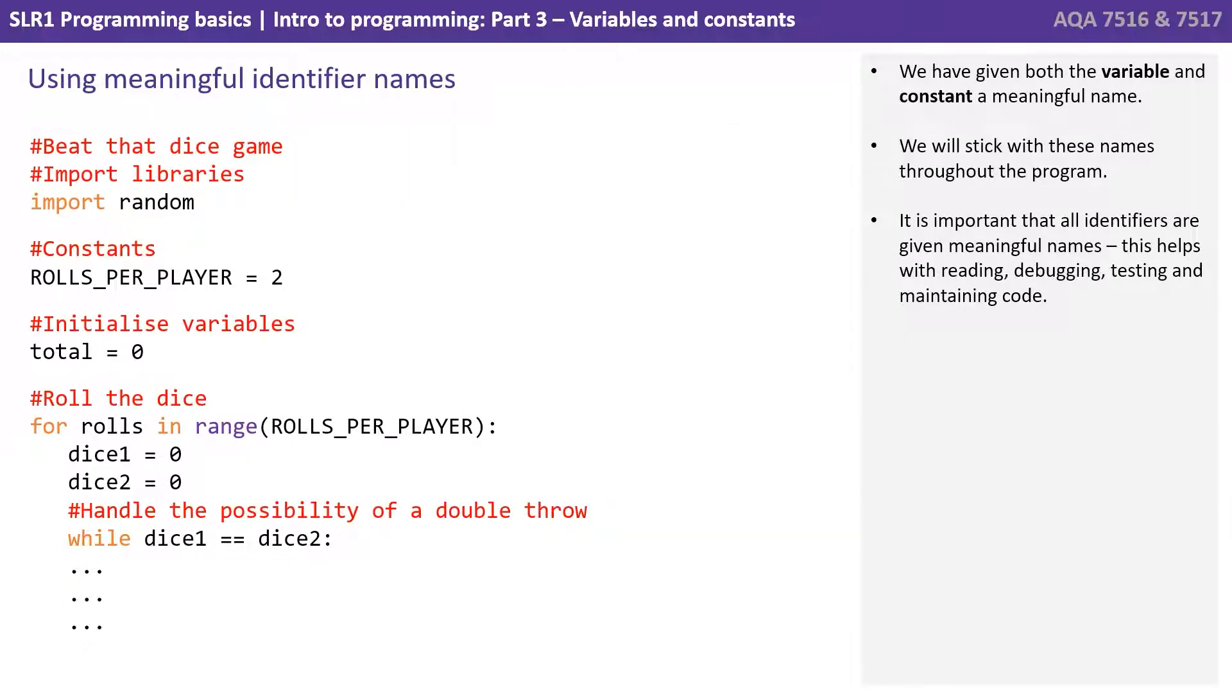Let's briefly discuss the importance of using meaningful identifier names. We have given both the variable and constant a meaningful name in our program and will stick with these names throughout the program. It is important that all identifiers are given meaningful names as this helps with reading, debugging, testing, and maintaining code. By using meaningful names for identifiers, our code starts to make sense.